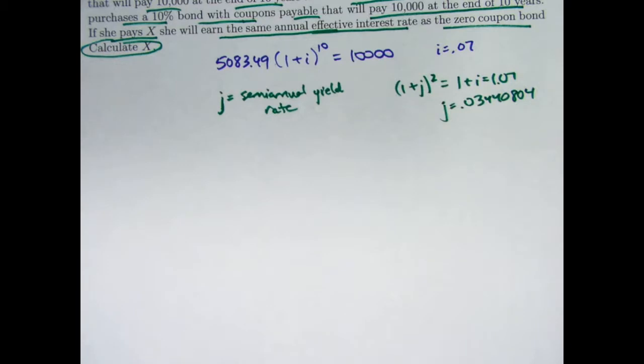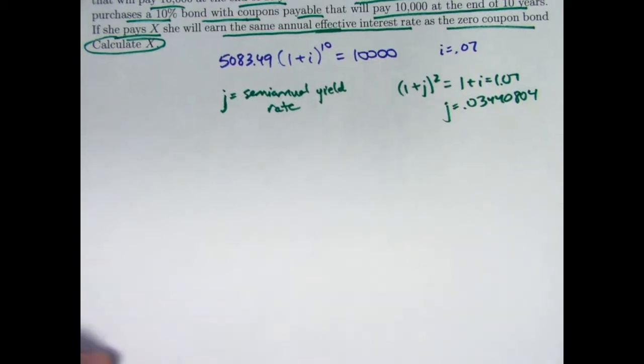But just keep in mind that oftentimes, you know, on a multiple choice exam, you're going to have one answer that's definitely closest to whatever answer you get even if you round 0.0344, like they do in the solutions manual. All right, so now let's think about the bond she does buy.